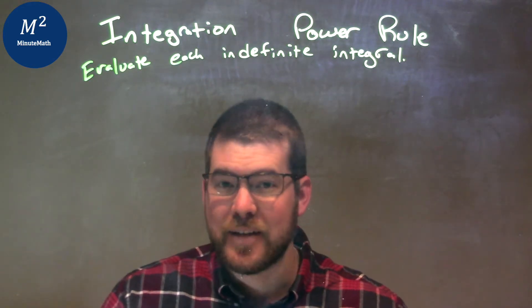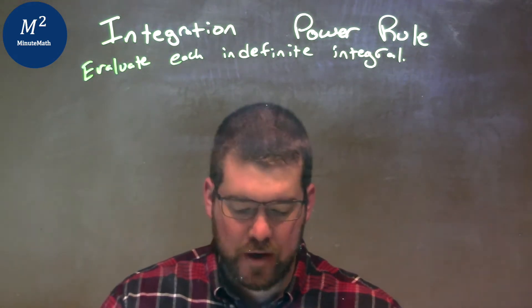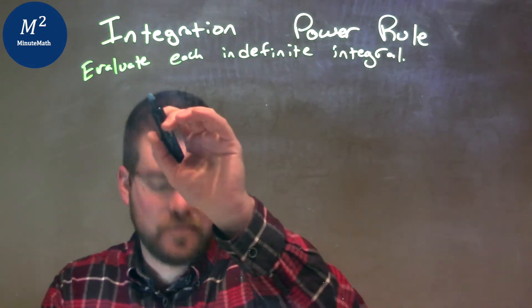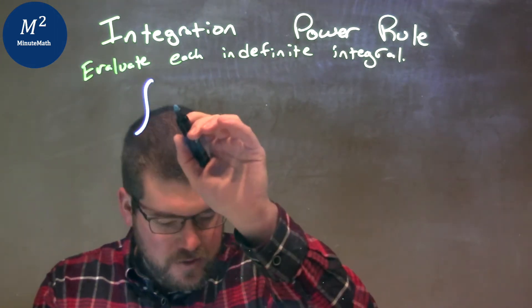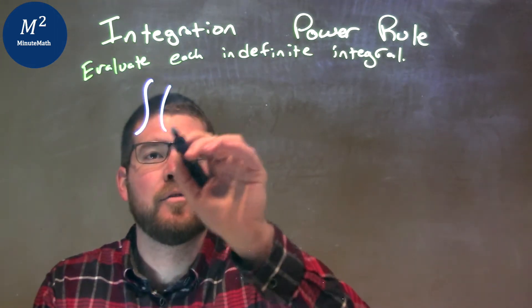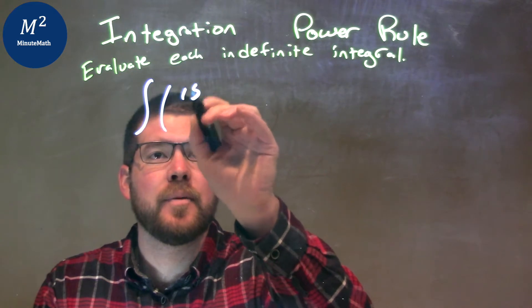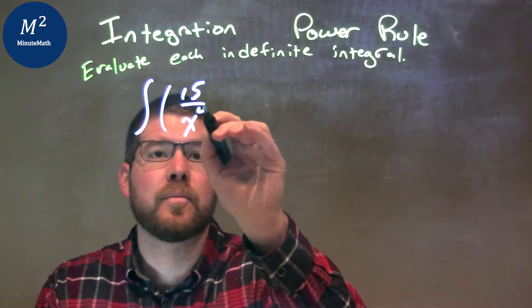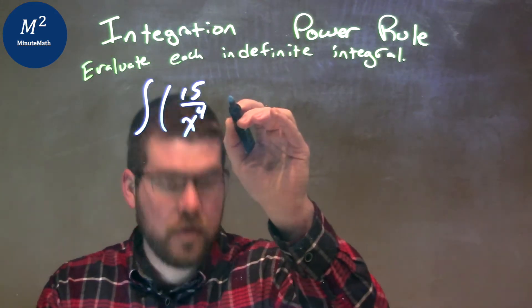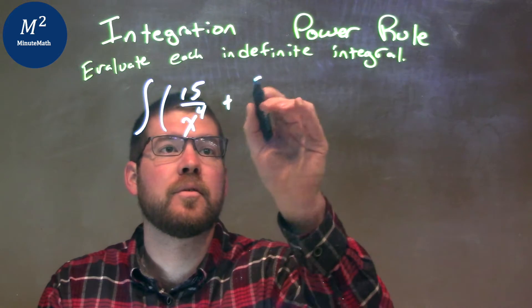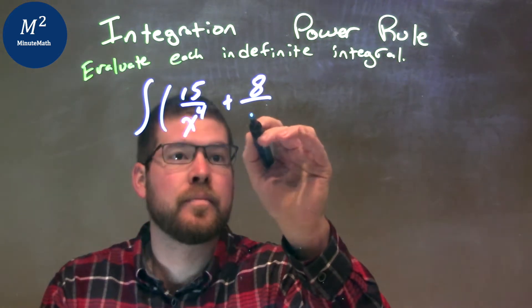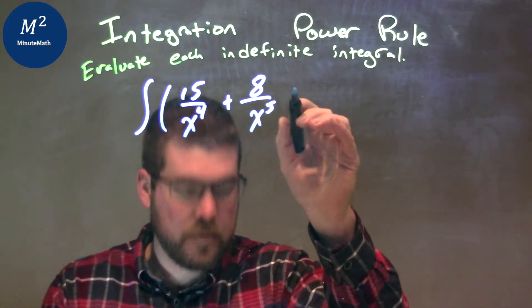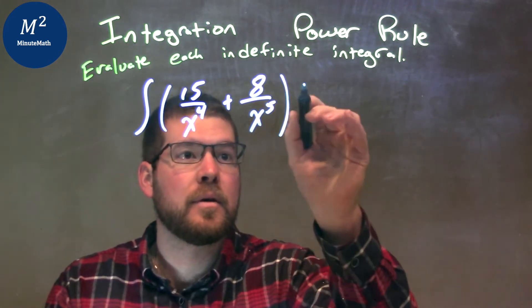So, if I was given this integral — the integral of 15 over x to the 4th, plus 8 over x to the 5th, dx.